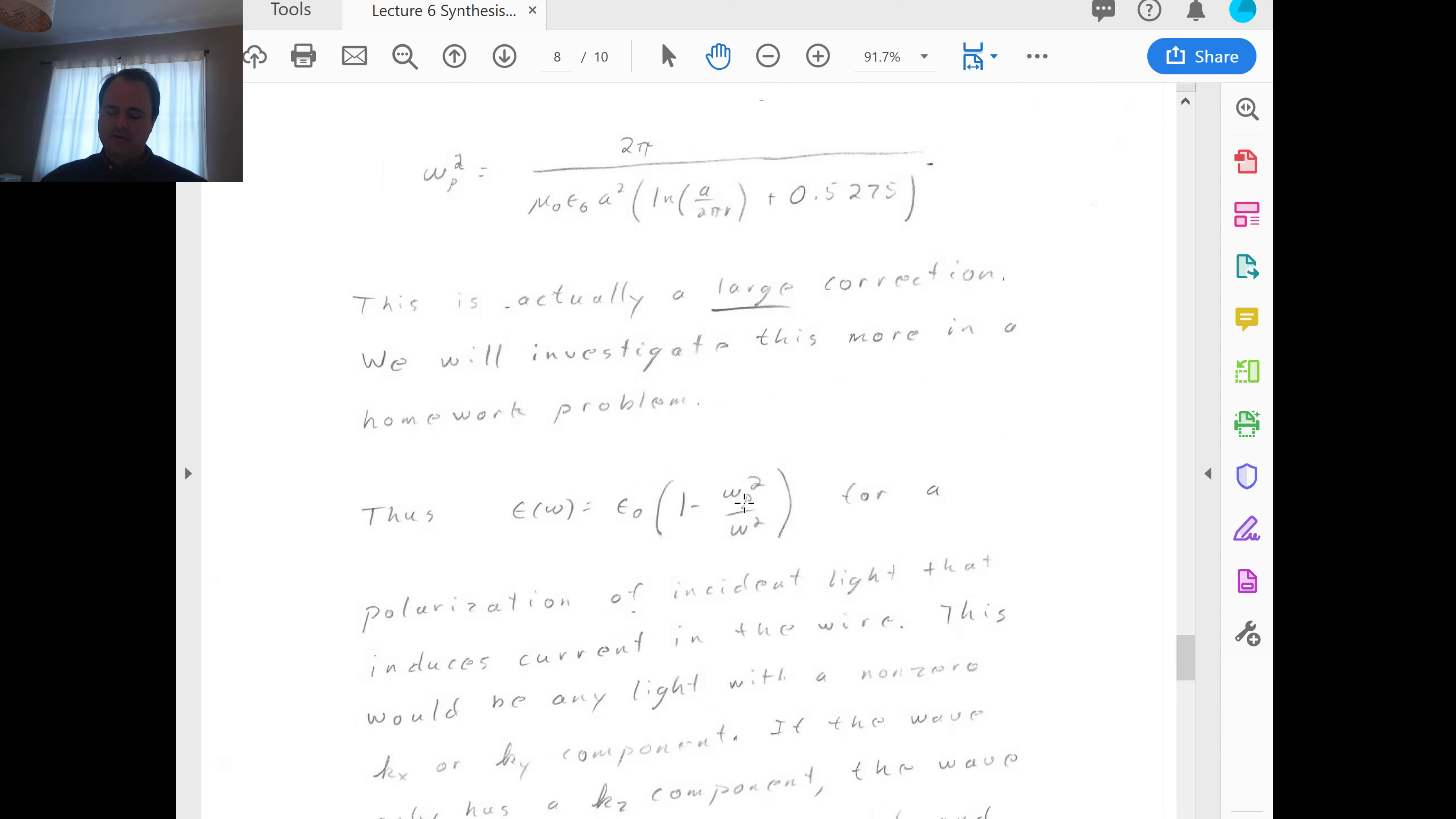So this is actually a large correction. And like I said, we will investigate it more in a homework problem. So, depending, you're going to use one formula or the other for the omega p, but you're going to get some value. And then you can express epsilon in this way. For a polarization of incident light that can induce current in the wire. So, if a certain polarization of light can't induce current in the wire, then that light doesn't really see the wire. And so the epsilon is just going to be equal to the free space epsilon or epsilon naught.